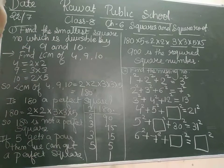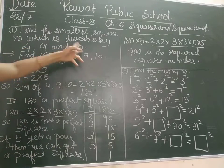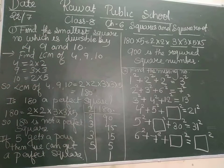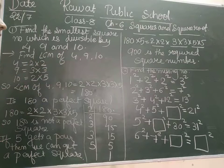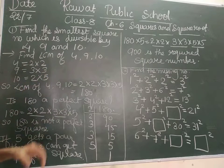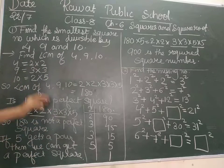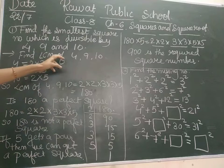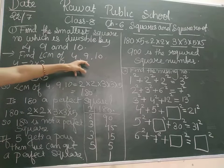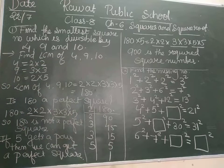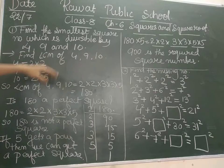Find the smallest square number which is divisible by 4, 9 and 10. With this question, what we have to do first is find the LCM of 4, 9 and 10. We will find the LCM of 4, 9 and 10.